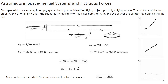In line with yesterday's discussion on inertial and non-inertial systems, assume a scenario where two spaceships A and B are moving in empty space, chasing an unidentified flying object — probably a flying saucer. The captains of the two ships must find out if the saucer is flying freely or if it is accelerating. Assume that the two spaceships and the saucer are all moving along a straight line.